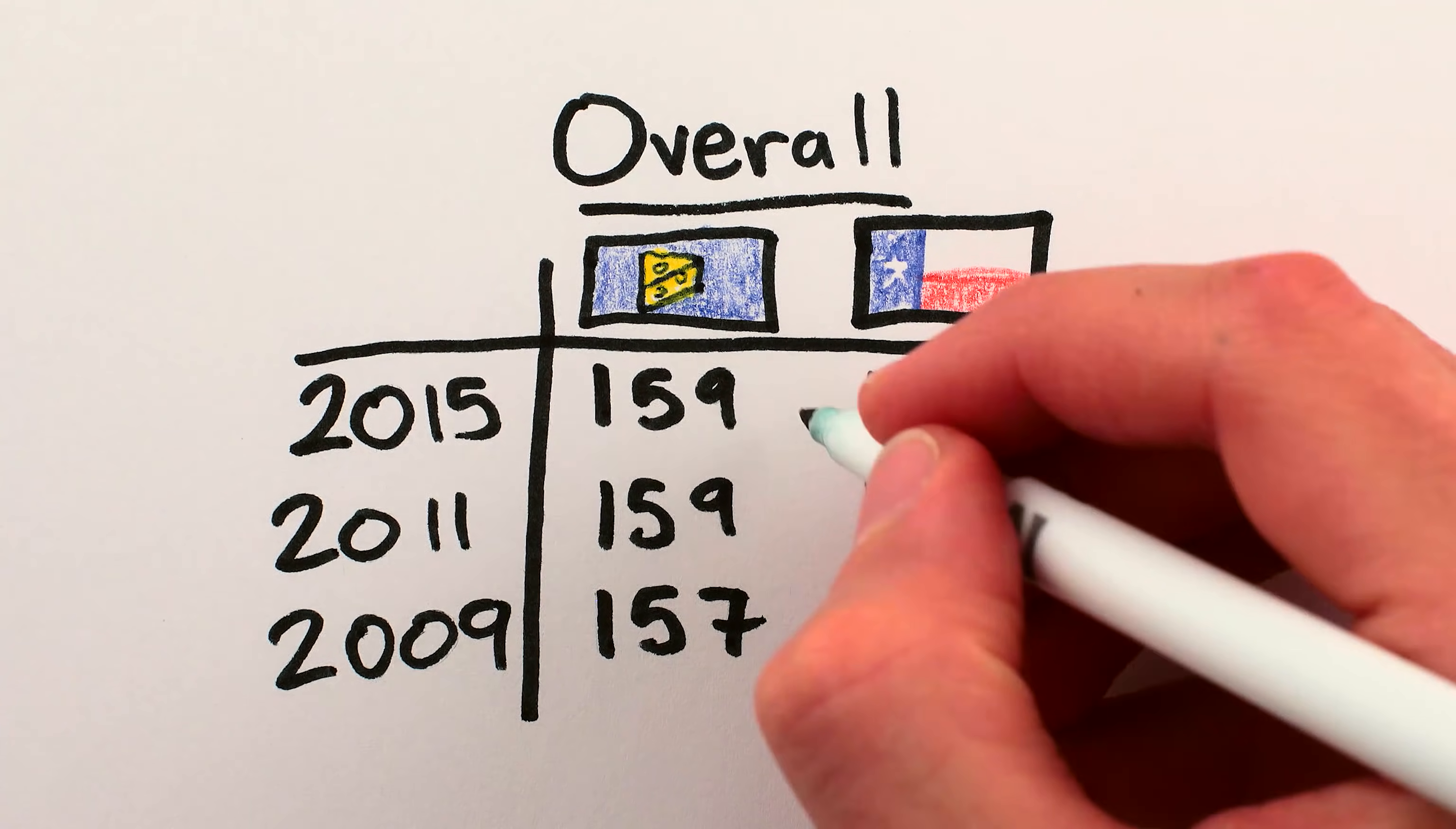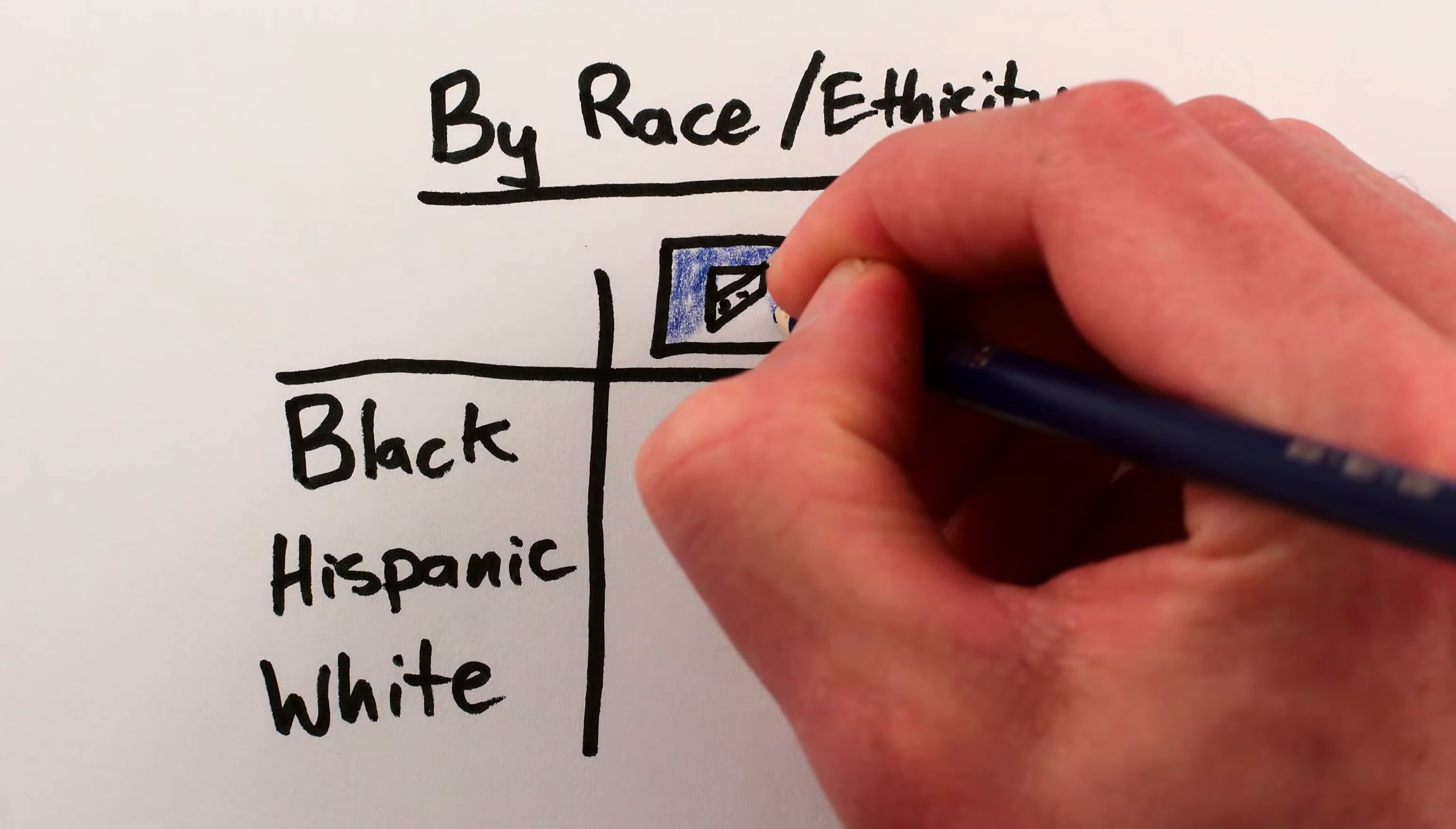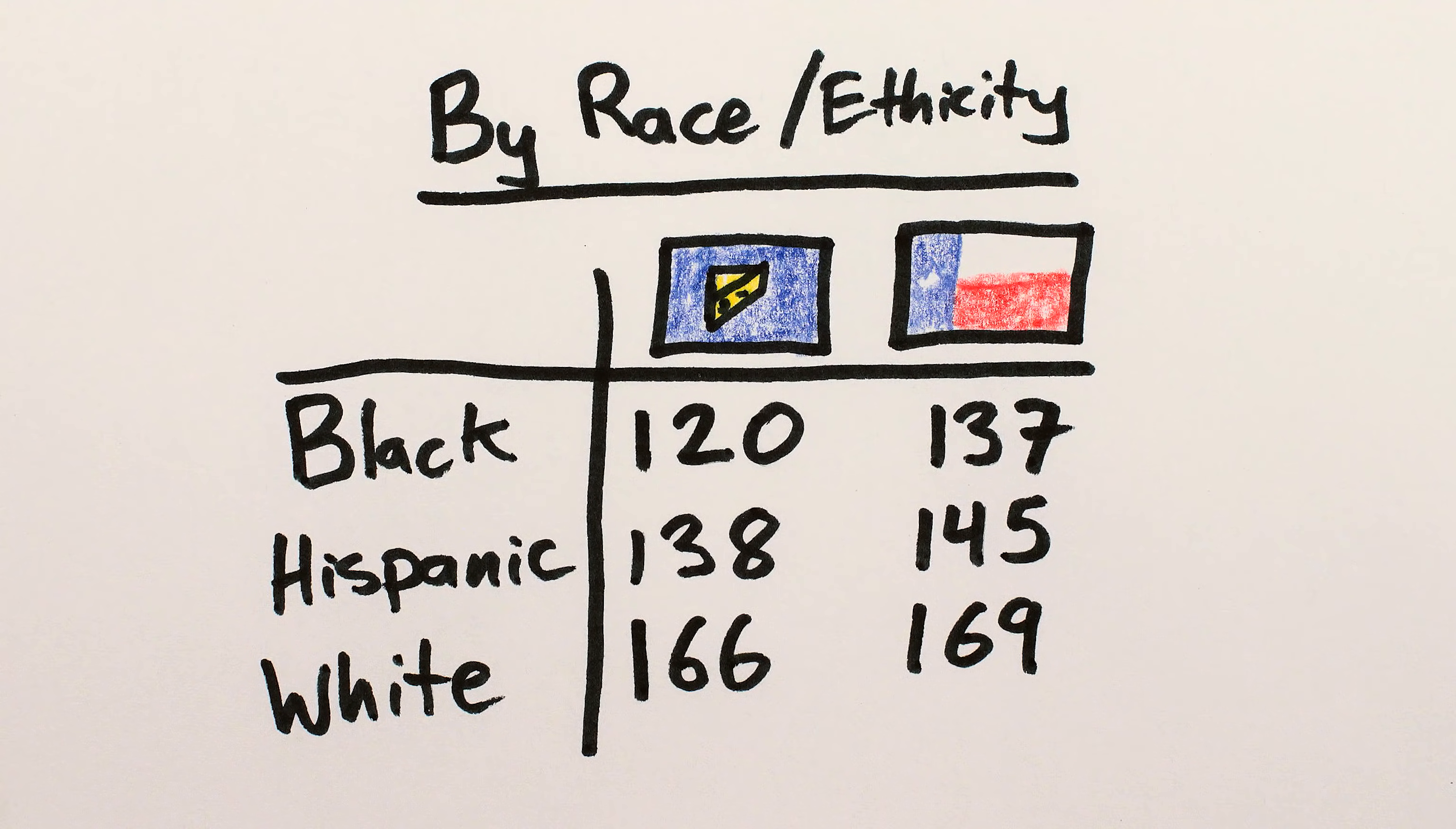As a more tangible example, Wisconsin has repeatedly had higher overall 8th grade standardized test scores than Texas, so you might think Wisconsin is doing a better job. However, when broken down by race, which via entrenched socioeconomic differences is a major factor in standardized test scores, Texas students performed better than Wisconsin students on all fronts.